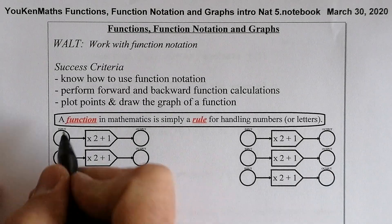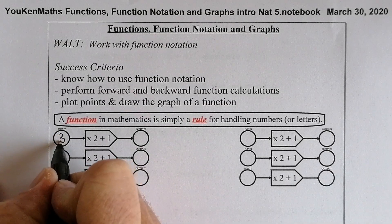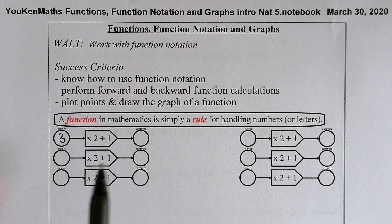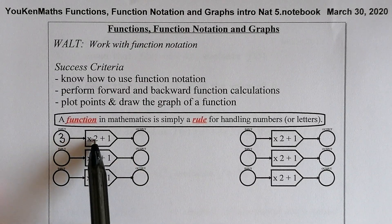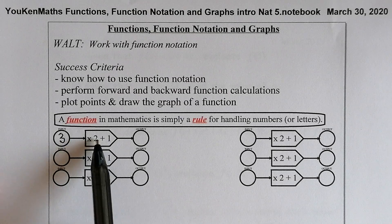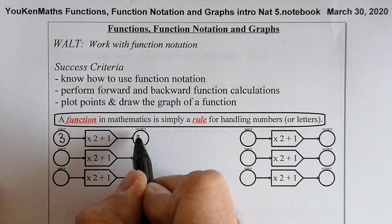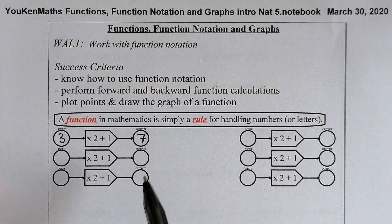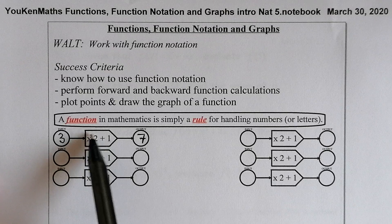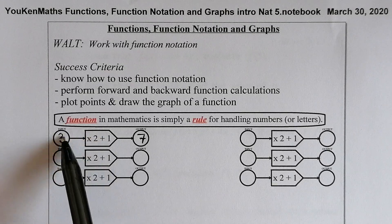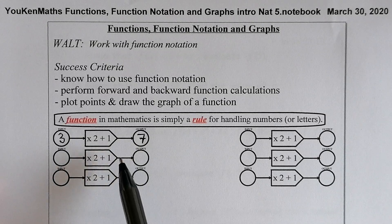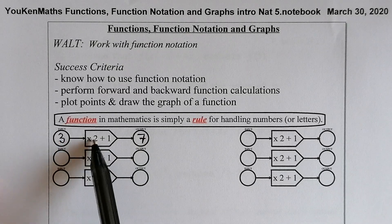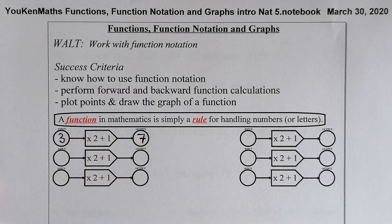Let's do an example. If I start off with putting three in as an input, I'm going to multiply three by two and get six, then add one to get seven as an output. So whatever's in the function box is what we apply to the input to get the output. Three going in: three times two plus one gives us seven.